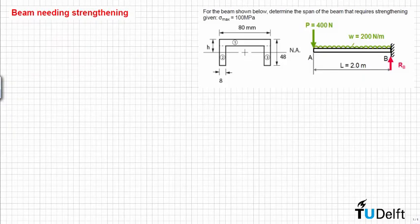In this problem we have this cantilever beam AB, which has a distributed load with intensity W equal to 200 N/m, and we have a point load applied at A equal to 400 N. We need to determine the span of the beam that requires strengthening, given σ_max equal to 100 MPa.